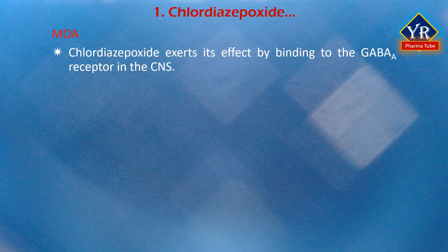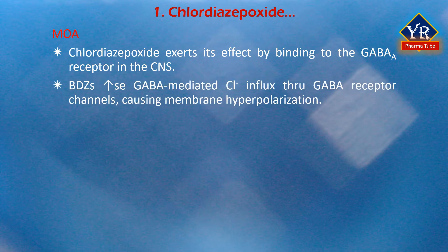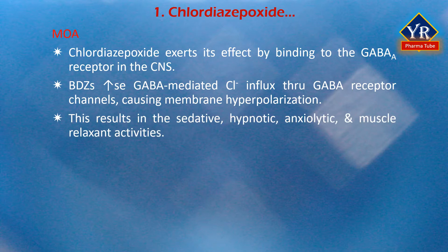Mechanism of action of Chlordiazepoxide: As discussed in the previous lesson, the mechanism of action of all benzodiazepines is quite similar. Chlordiazepoxide exerts its effect by binding to the benzodiazepine site at the GABA receptor chloride ionophore complex in the CNS, including the limbic system and reticular formation. This results in increased binding of the inhibitory neurotransmitter GABA to the GABA-A receptor. Benzodiazepines therefore enhance GABA-mediated chloride influx through GABA receptor channels, causing membrane hyperpolarization. The net neuroinhibitory effects result in the observed sedative, hypnotic, anxiolytic and muscle relaxant properties.